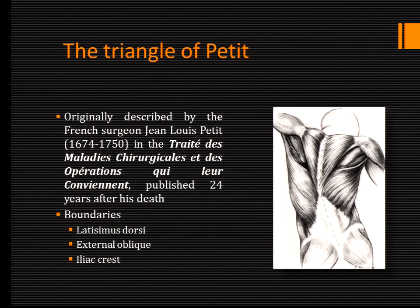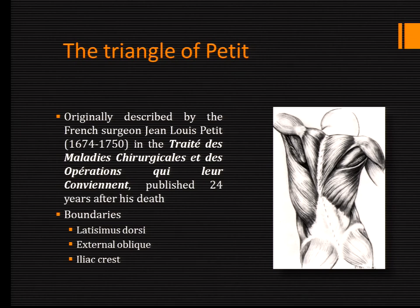In terms of the triangle of Petit — the triangle is not only petite, but was described by Petit. It's located between the latissimus dorsi, the external oblique, and the iliac crest. There are a lot of troubles with this triangle — as a matter of fact, it can be absent in about a third of patients. Just looking at the boundaries, you know that if the external oblique produces the anterior boundary of this small triangle, when we pass a needle through the triangle of Petit, we cannot pass through the external oblique. So you never traverse external oblique if you're going through a true triangle of Petit.